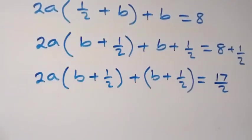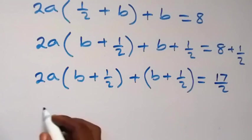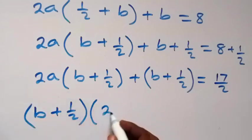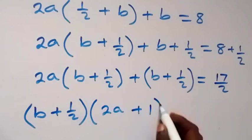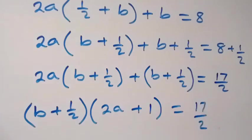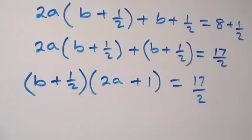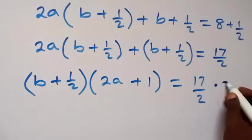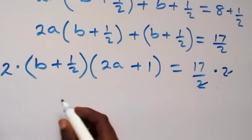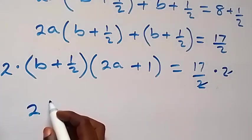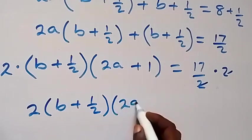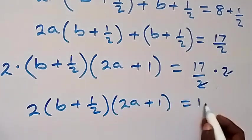Then what we have here, we can factor b plus ½ out. So we have b plus ½ common, then what is left here is 2a, then what is left here is plus 1, then equals to 17 over 2. From here, we can multiply both sides by 2. Then 2 cancels out, and this gives us 2 into bracket b plus ½, close bracket, open bracket, 2a plus 1, equals to 17.